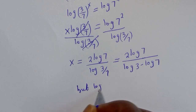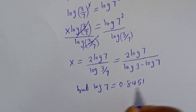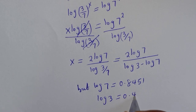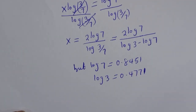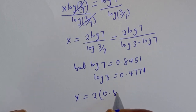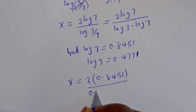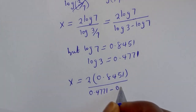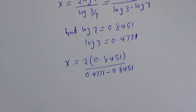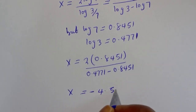Log 7 is equal to 0.8451, and log 3 is equal to 0.4771. So let's substitute. S is equal to 2 times 0.8451 divided by 0.4771 minus 0.8451. S will be equal to minus 4.5930.